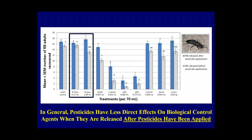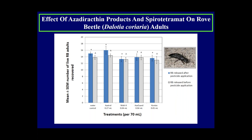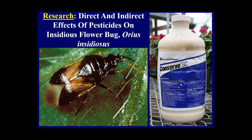Another key finding: BotaniGard (Beauveria bassiana) showed that pesticides generally have fewer direct effects on biological control agents when they are released after pesticide applications rather than before — reducing exposure of rove beetle adults to the insecticide treatments. We also looked at azadirachtin formulations (Azitrol, Molt-X, and Aziguard) and spirotetramat (Kontos). None of the treatments, regardless of application timing, had any indirect effects on rove beetle adults.